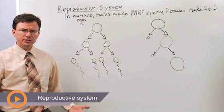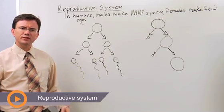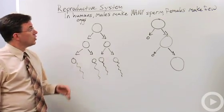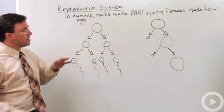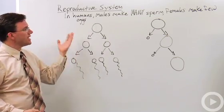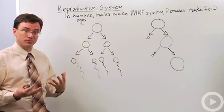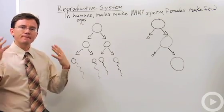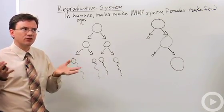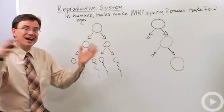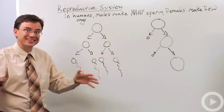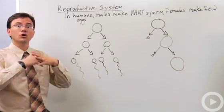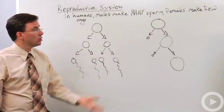The reproductive system is one of the favorite systems for students to get interested in. In human reproduction there's a specialization: males make many sperm while females make very few. Males are specialized for having lots of gametes because the chances of any one sperm making it are pretty slim, so they use a whole bunch of them.